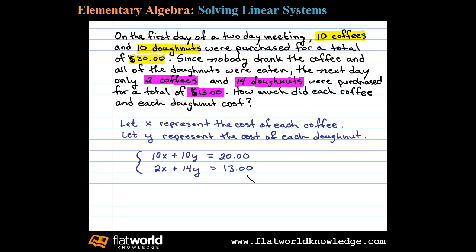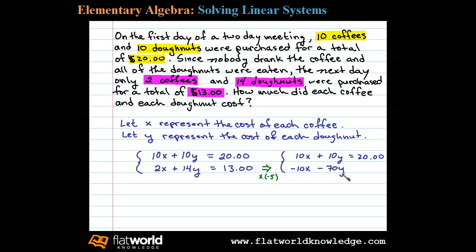Now that we have our setup, we have a linear system and we can solve it using any method. In this case, we can solve by elimination if we multiply the second equation by negative five. That'll line up the variable X to eliminate. Negative five times 2X is negative 10X, negative five times 14 is negative 70Y, and negative five times 13 leaves us with negative 65.